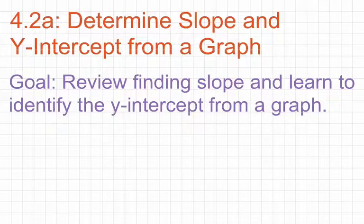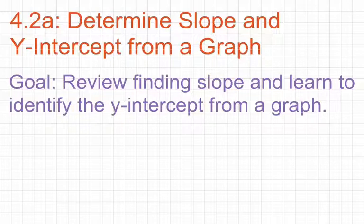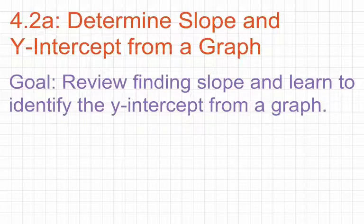Today's lesson is on 4.2a, Determine Slope and Y-Intercept from a Graph. Our goal for this lesson is to review finding slope and learn to identify the y-intercept from a graph. The first thing I want to do is go back and review finding slope from a graph. This lesson was originally 3.2a, so if you forgot how to find slope from a graph and need more examples on what I'm going through here, please go back and watch that video. I cannot emphasize enough how important it is that you're able to identify the slope from a graph, so please go back to 3.2a and watch that video.